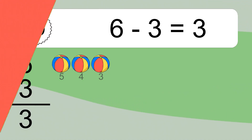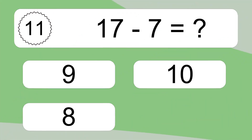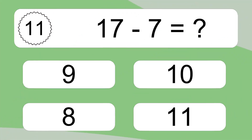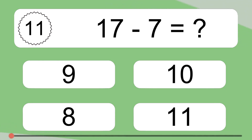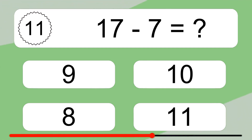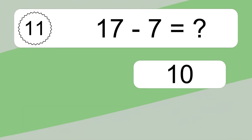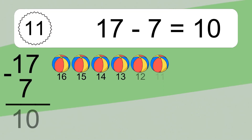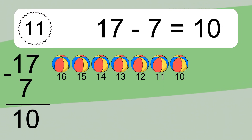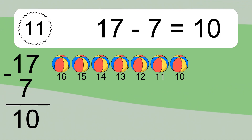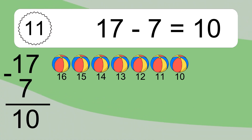17 minus 7 equals what? 17 minus 7 equals 10. Let's count it: 16, 15, 14, 13, 12, 11, 10.